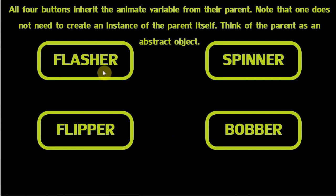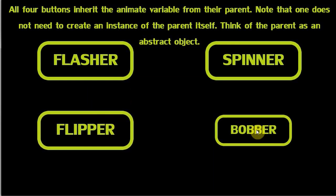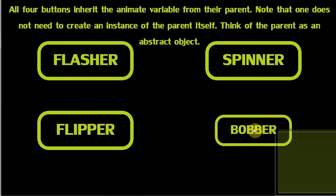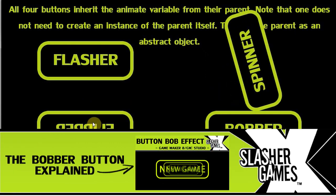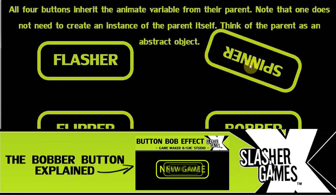So here we have the flasher — the mouse is over it, it flashes. There's no code in the flasher object to tell it when the mouse is over it, it should flash. It just says: if I can animate, this is what I need to do. So the parent tells the child the mouse is over you, you are now allowed to animate, start flashing. And then the flipper — it just flips. The bobber — it does the good old bob. And the spinner — this is going to spin as long as my mouse is over it, and then it will stop spinning, spin faster, and slow down.